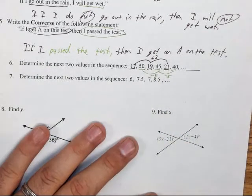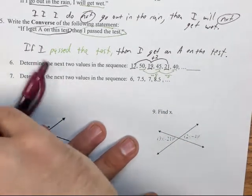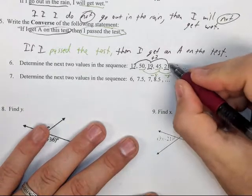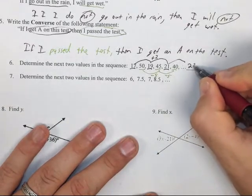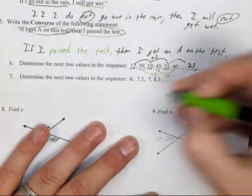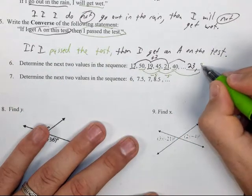If that pattern were to continue, the next thing I would do is add two again to get 23, and then I would subtract five again to get 35.